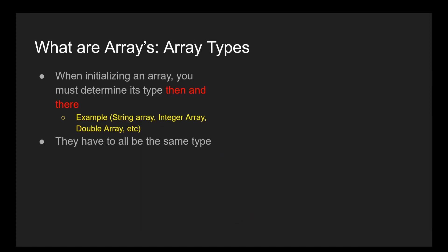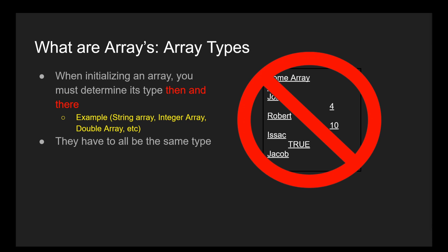Another thing to note is that when you initialize an array you must determine which type of array it is right then and there. For example, you have to specifically say it will be an array of strings or integers when defining it. Also, you are not allowed to mix and match — meaning you can't have an array full of integers with a few strings and some doubles thrown into the mix. They have to be all the same type.